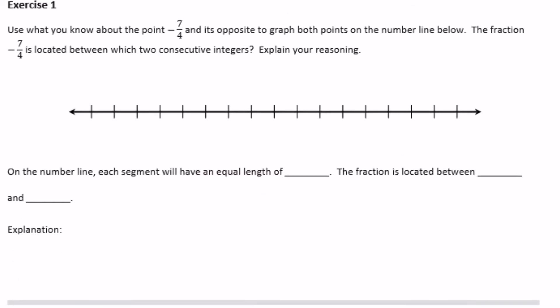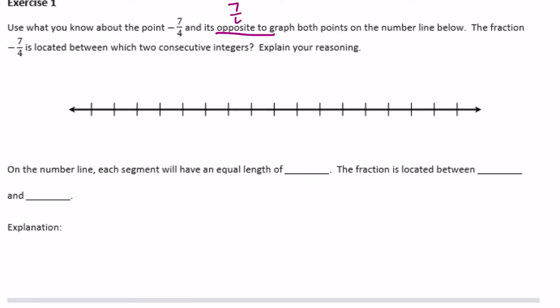Exercise 1: use what you know about negative seven fourths and its opposite to graph both points on the number line. The fraction negative seven fourths is located between which two consecutive integers? We find the middle, plot zero, and since we're counting in fourths, I'll label the number line in fourths: one fourth, four fourths, and so on.